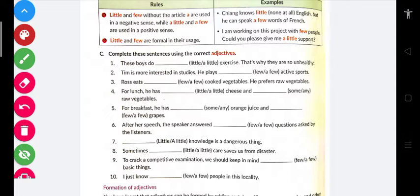Question two: 'Tim is more interested in studies. He plays few/a few active sports.' He's more interested in studies, so he plays very few, almost negligible active sports. Negligible active sports means negligible, zero. If it's zero, we'll use few.